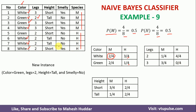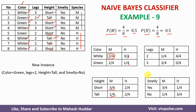For the height attribute, in the 4 M examples, short appears 3 times and tall appears 1 time, so P(height=short | M) = 3/4 and P(height=tall | M) = 1/4. In the H examples, short and tall each appear 2 times, giving P(height=short | H) = 2/4 and P(height=tall | H) = 2/4. Similarly, we calculate the conditional probability for the smelly attribute as well.